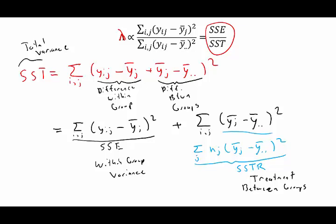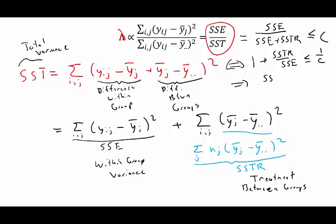If we use this decomposition of the total sum of squares by decomposing into these two smaller ones, we can rewrite our lambda as SSE over SSE plus SSTR. Our likelihood test had us rejecting the null if that was less than or equal to c. If I invert both sides, I would get one plus SSTR over SSE, and that means I could switch that to a greater. I am now rejecting the null if the sum of squared treatment over the sum of squared errors is greater than or equal to some quantity c star. This gives me a new form of a rejection region which now involves a ratio of the between group variability to the within group variability.